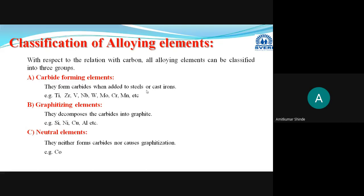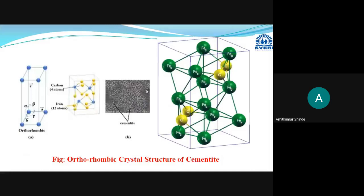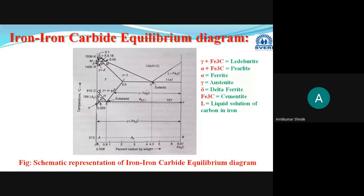The iron-carbide equilibrium diagram we studied last lecture — also known as the iron-carbon equilibrium diagram or phase diagram — is drawn by considering plain carbon steel. Plain carbon steel is an alloy of iron and carbon, where iron is the base metal and carbon is the alloying element. Some other elements like sulfur and phosphorus may be present, but they are present as impurities — not added intentionally — and such steels are termed plain carbon steels.